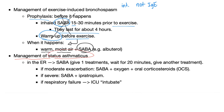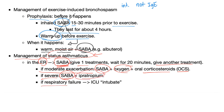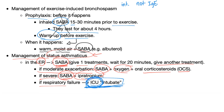Management of status asthmaticus — that's an emergency. The patient must go to the ER. Give short-acting beta agonists; administer one treatment, wait 20 minutes, then re-administer. If there is moderate exacerbation, add oxygen and oral corticosteroids. If severe, add ipratropium to the short-acting beta agonist. If there is respiratory failure, intubate and mechanically ventilate in the ICU.